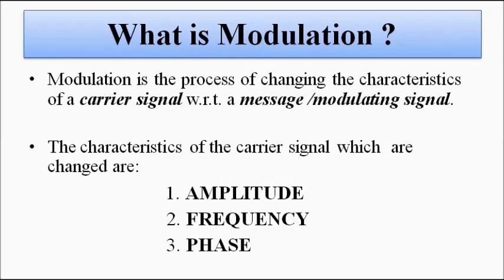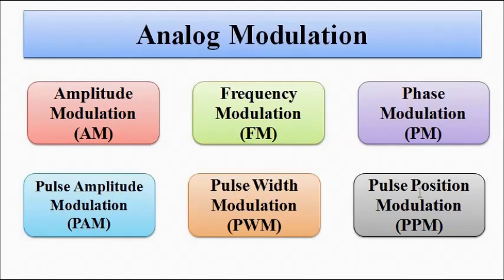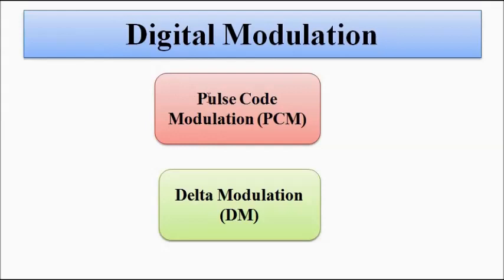In general, there are two types of modulation. Analog modulation involves analog signals and can be classified as amplitude modulation, frequency modulation, phase modulation, pulse amplitude modulation, pulse width modulation, and pulse position modulation. Digital modulation involves pulse code modulation and delta modulation.